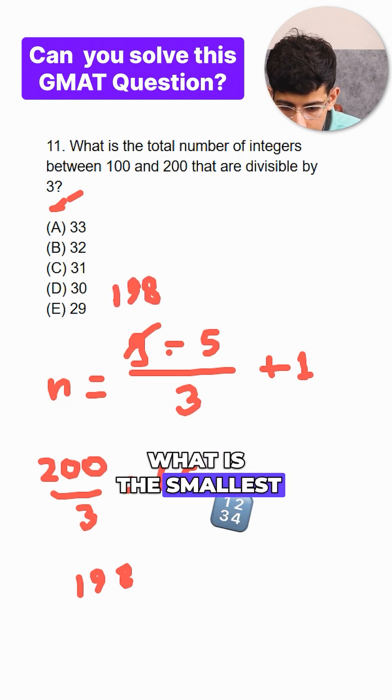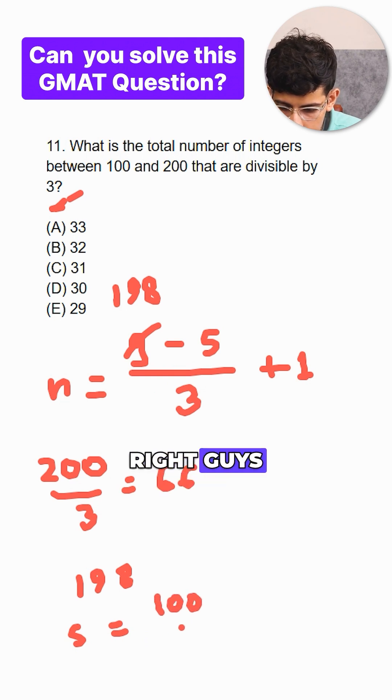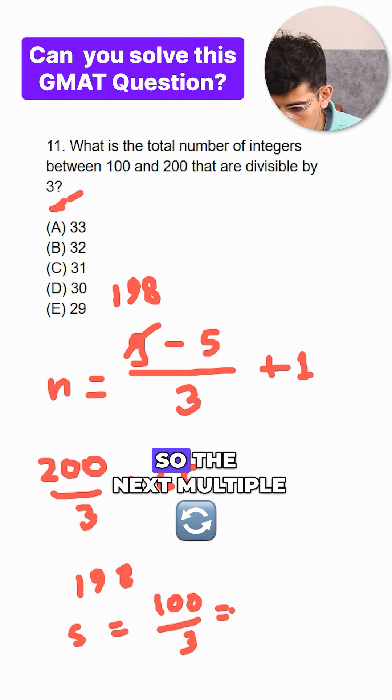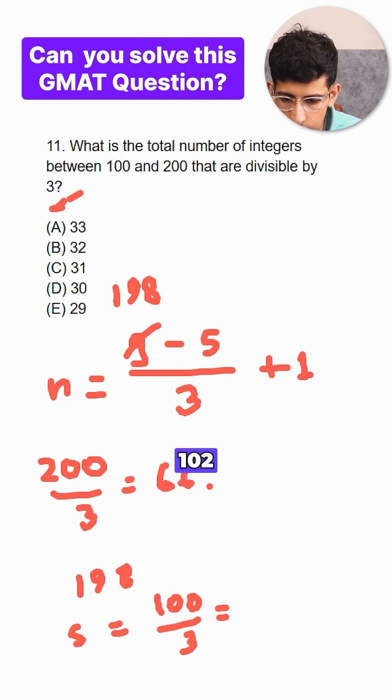What is the smallest? How do we calculate this? 100 divided by 3, right guys? So we know 99 is the greatest multiple. So the next multiple after 99, that's 102.